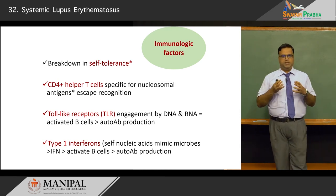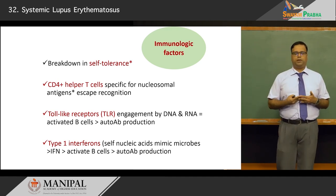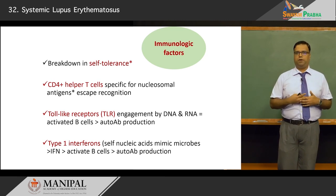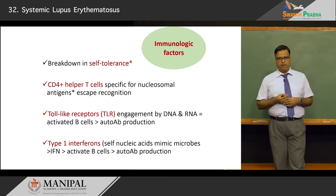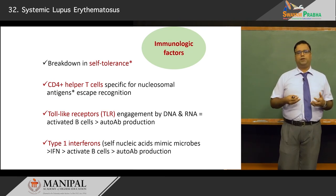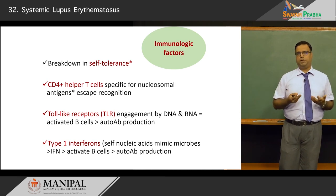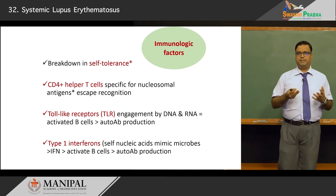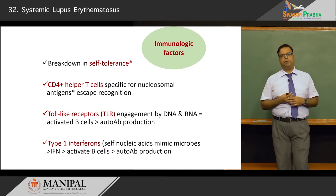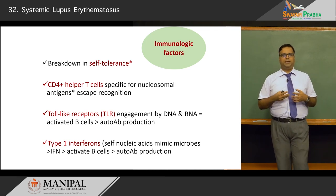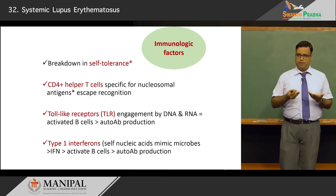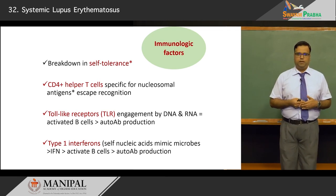Regarding immunological factors, the principal mechanism is a breakdown of self-tolerance. CD4 helper cells become specific for nucleosomal antigens and escape recognition by the body's system, leading to them being attacked as foreign. Toll-like receptors, normally recognizing microbial components, become engaged by host DNA and RNA, activating B cells and producing autoantibodies against one's own DNA and RNA — a form of molecular mimicry.